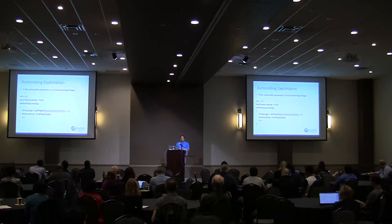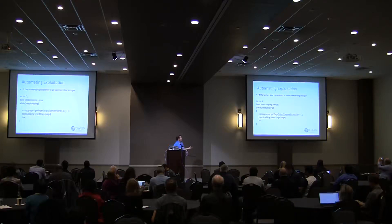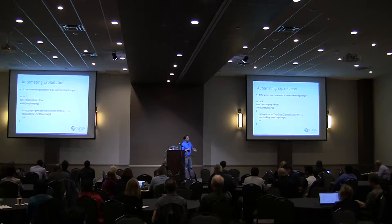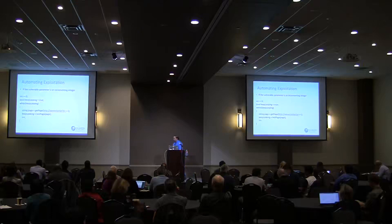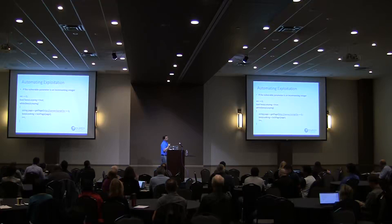In terms of automated exploitation, it's actually really easy. If it's a sequential number, all I have to do is write a script that says: start with this number, iterate through each of these numbers up to whatever value, and tell me whether it's successful. We're basically limited by how fast our computers make these requests and how fast the server responds. If the server has no rate limitation and isn't controlling access, you can iterate through these things very, very quickly.